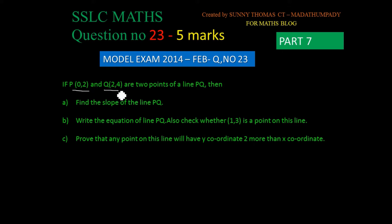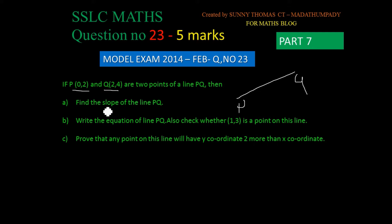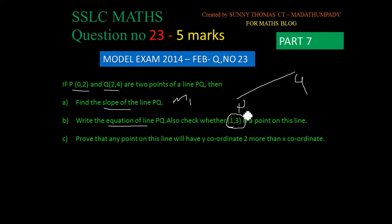P and Q are two points of a line. What you have done in the model exam is find the slope of the line. Write the equation, show the working and equation. (1,3) is a point on this line.